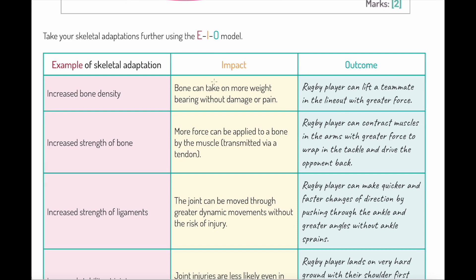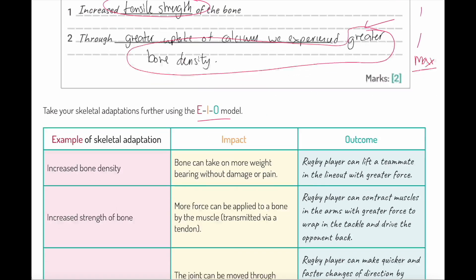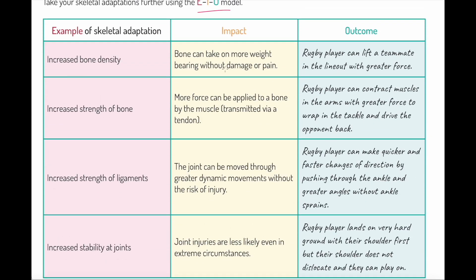Now we want to take this a bit further. I want to introduce you to the EIO model. This is a model I've written about very extensively and it's something I encourage you to use in your exam. Pretty much everyone knows that skeletal adaptations include bone density, stronger ligaments, increased stability. But what I want you to do to mark yourself out as a student who knows this stuff better is to take that further.